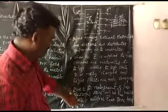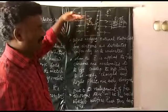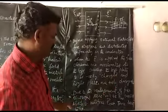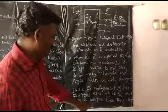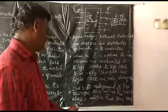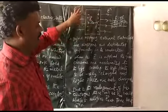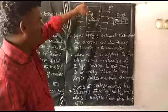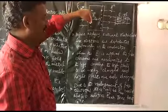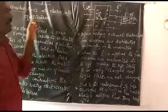The induced electric field inside the metal plate nullifies the external electric field in approximately 10 to the power of minus 16 seconds. After this, the induced electric field cancels the internal electric field, so there is no electric field inside the conductor, and the conductor is said to be at electrostatic equilibrium.